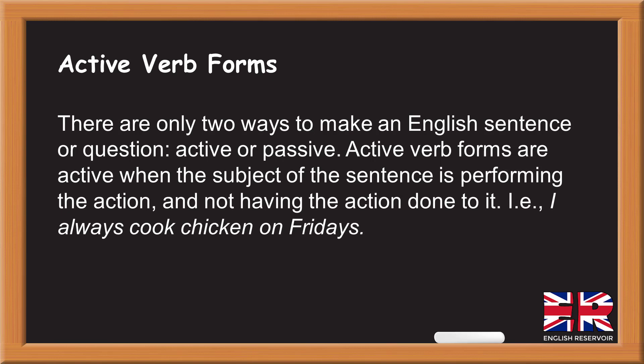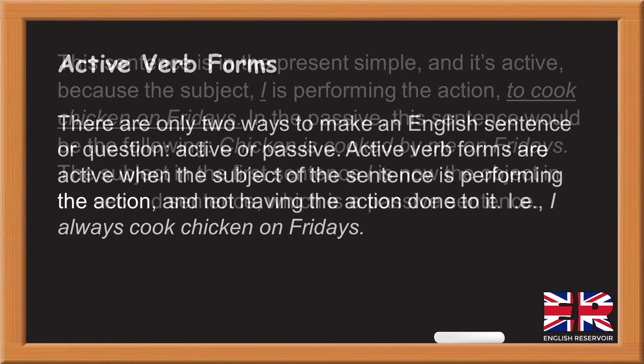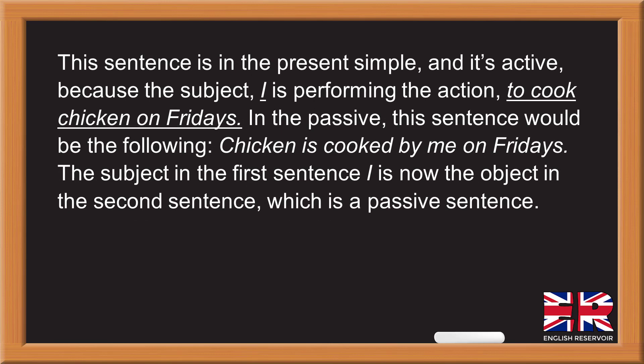Active verb forms are active when the subject of the sentence is performing the action and not having the action done to it. For example: 'I always cook chicken on Fridays.' This sentence is in the present simple and it's active because the subject 'I' is performing the action — to cook chicken on Fridays.